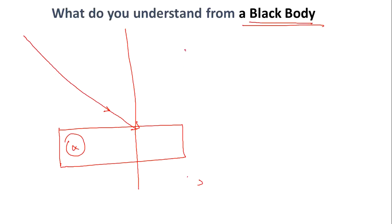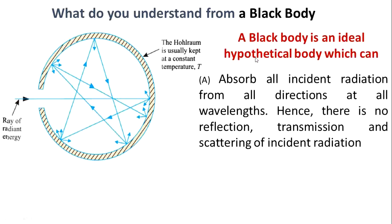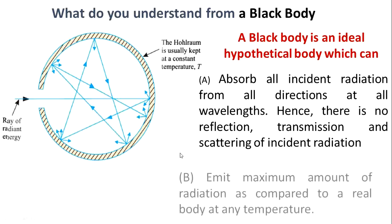After a certain amount of time, once the heat energy is absorbed, the body will start to emit it — that is what we call emissive power. A black body is an ideal hypothetical body which can absorb all kinds of radiation from all directions at all wavelengths. Hence, there is no reflection, transmission, or scattering of incident radiation.